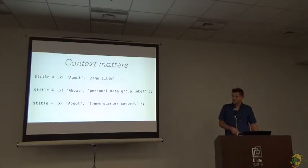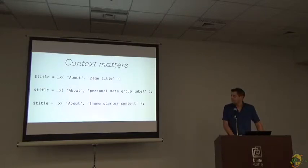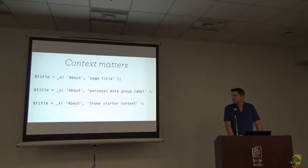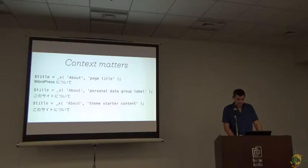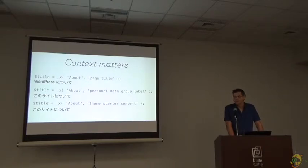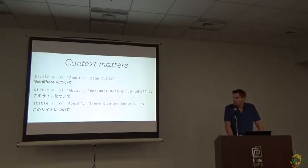Context matters — that's really an important part in WordPress. We have the string 'about', which is in English the same for all three contexts. The second argument in this case is 'page title' or 'theme starter content', which is the argument for the context. That's important because some languages have different translations based on context. Even in Japanese, we have two different translations. For example, the first one is 'about' used on the WordPress about page, so the translation includes 'WordPress' — which is fine — but it's probably not fine for the other two cases, where it's just the translation of 'about'.